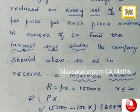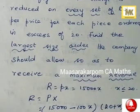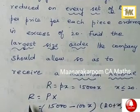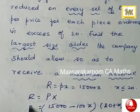So 15,000 minus 100x, and X is 20 plus x. You have to discuss maximum revenue, so you have to differentiate this once, dR by dx.